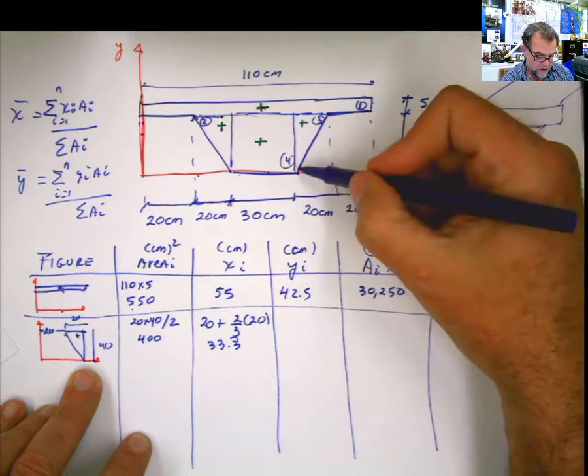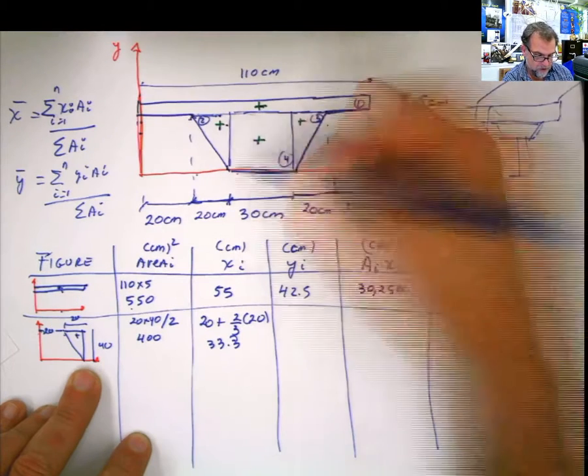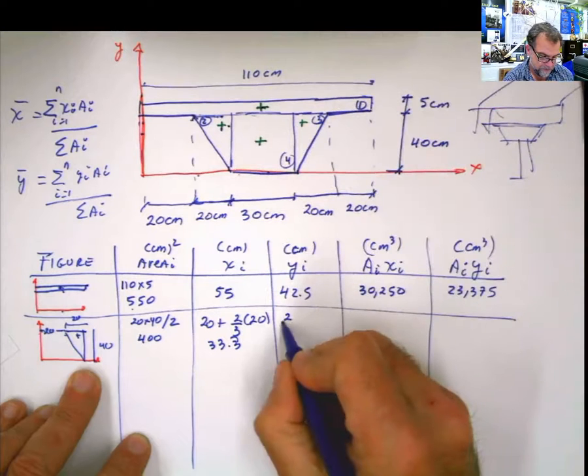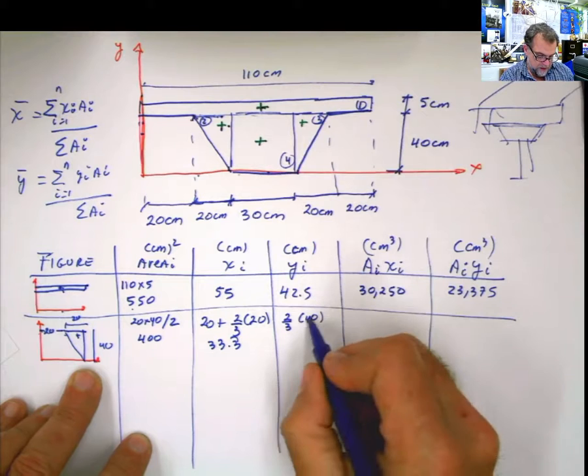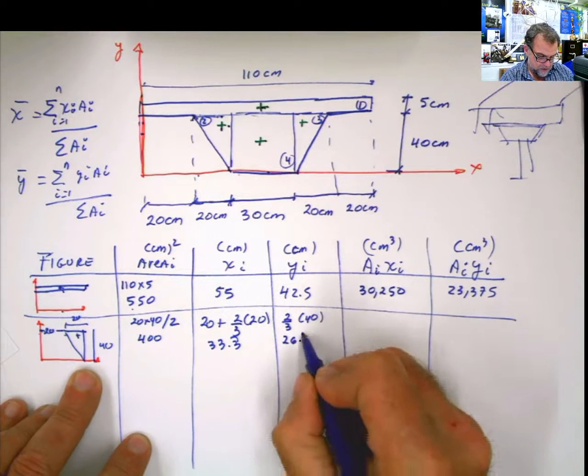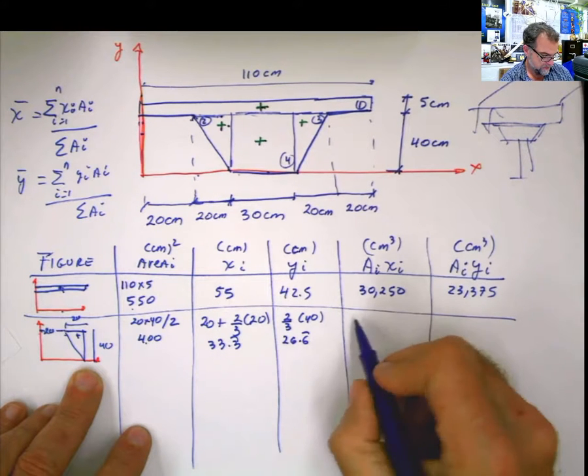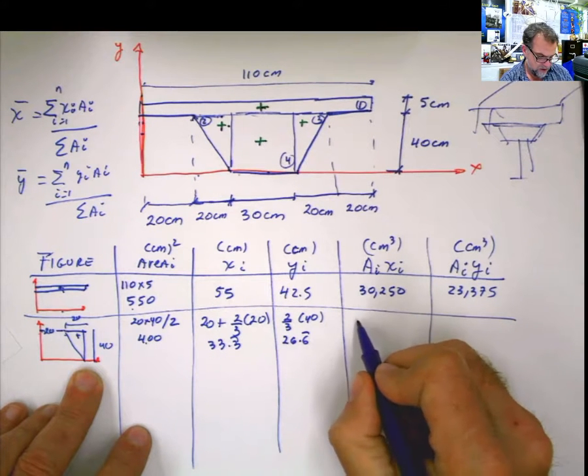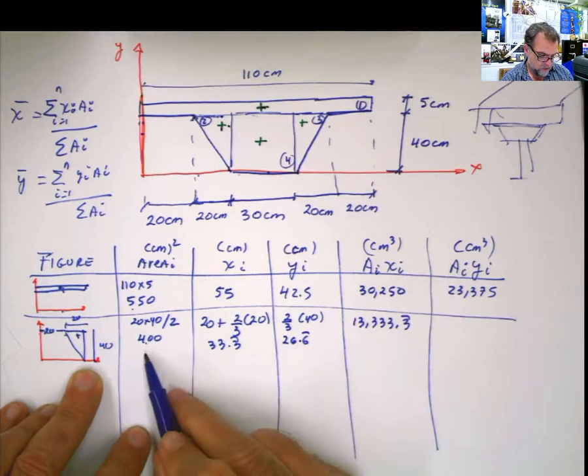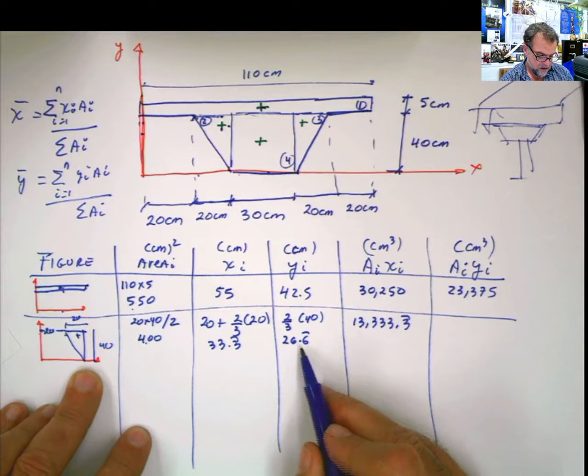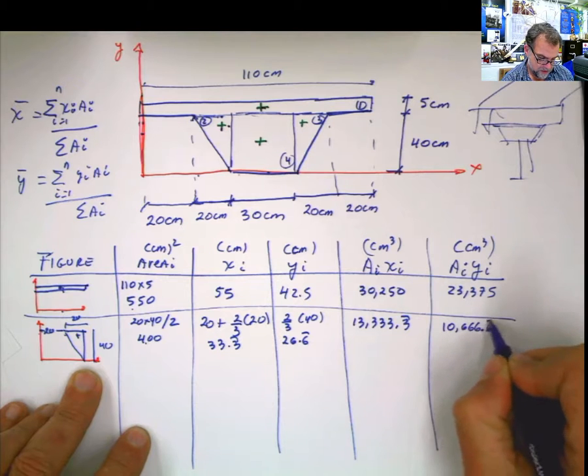In y, 2 thirds from this angle, acute angle, and up. 2 thirds of 40. Which is 80 divided by 3, 26.6 periodic. Now with the multiplication, A times x, 30,000, 13,000, 3, 3, 3.3. And 400 times 26 is 10,666 periodic.